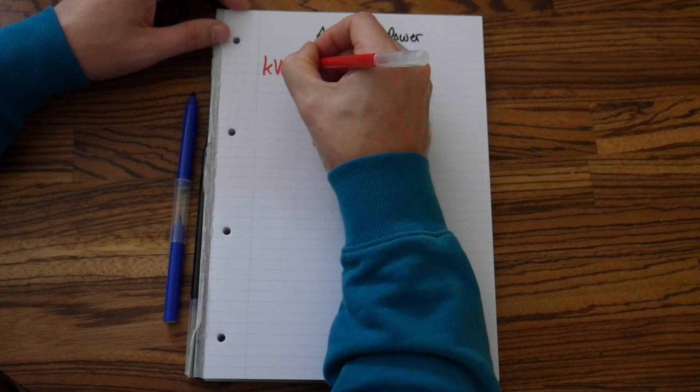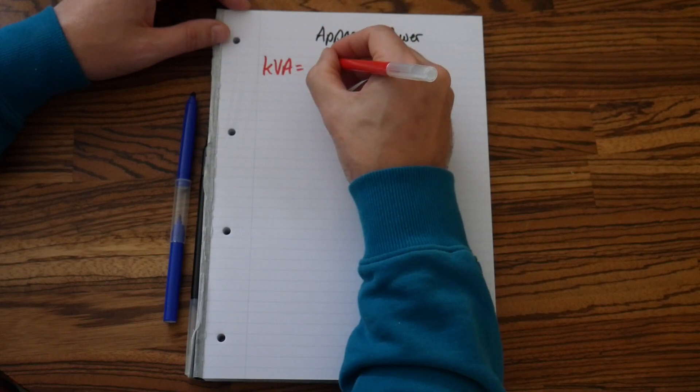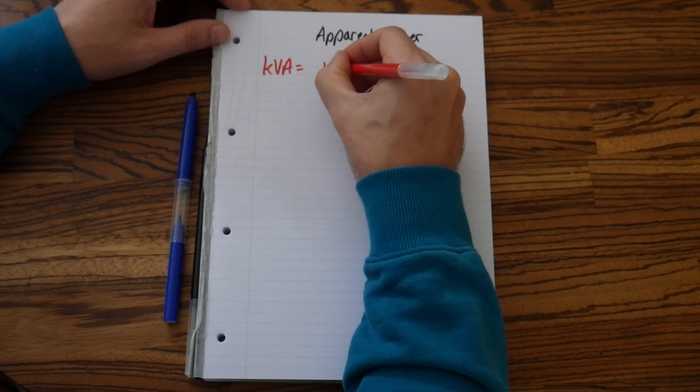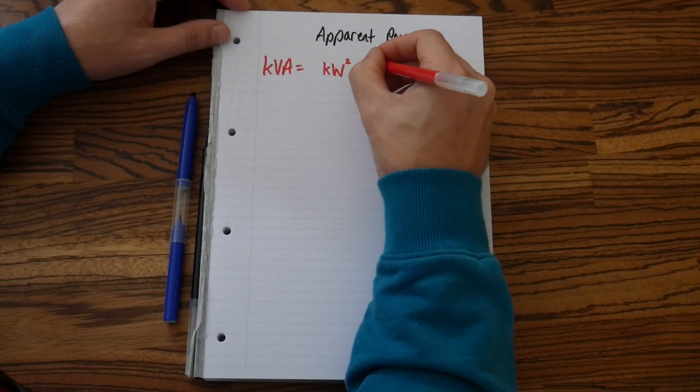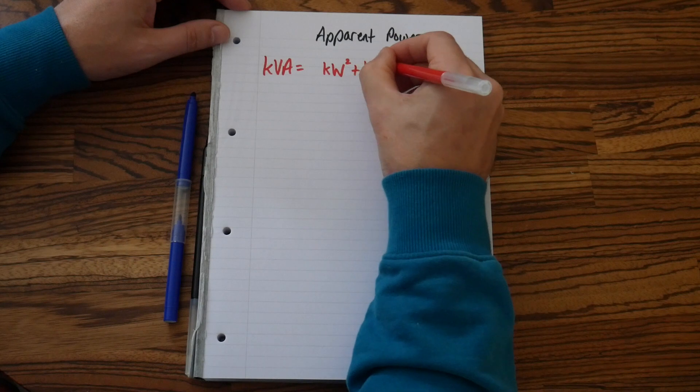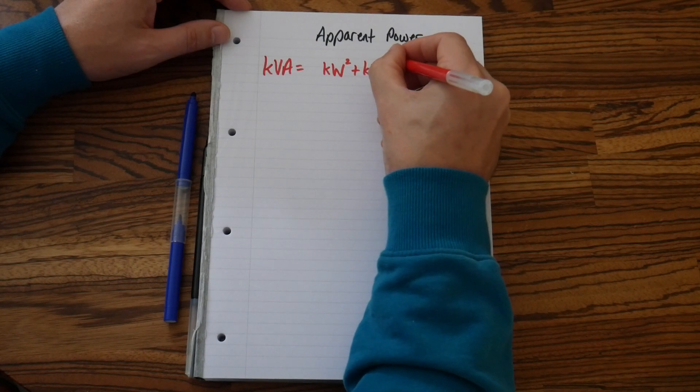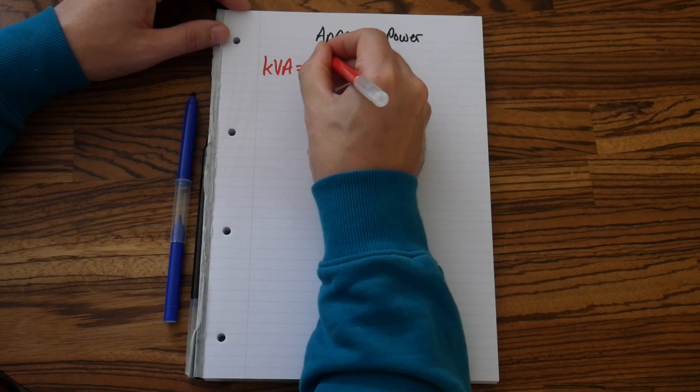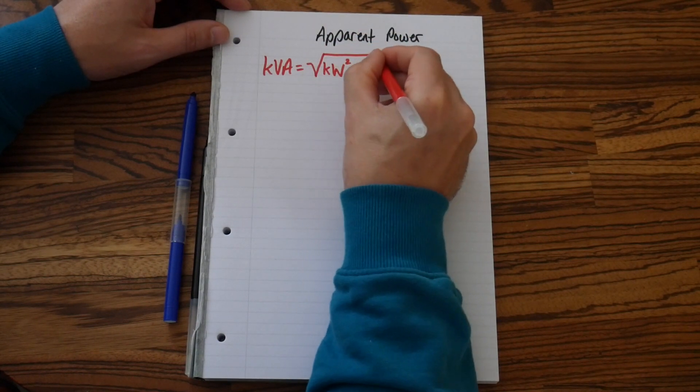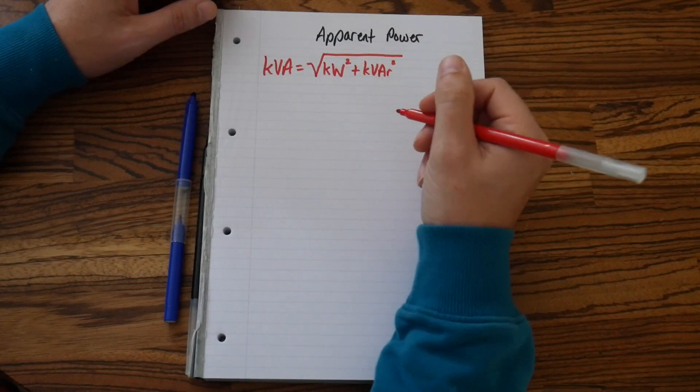kVA equals square root of kilowatts squared plus kVAR squared. And that is the Pythagoras formula.